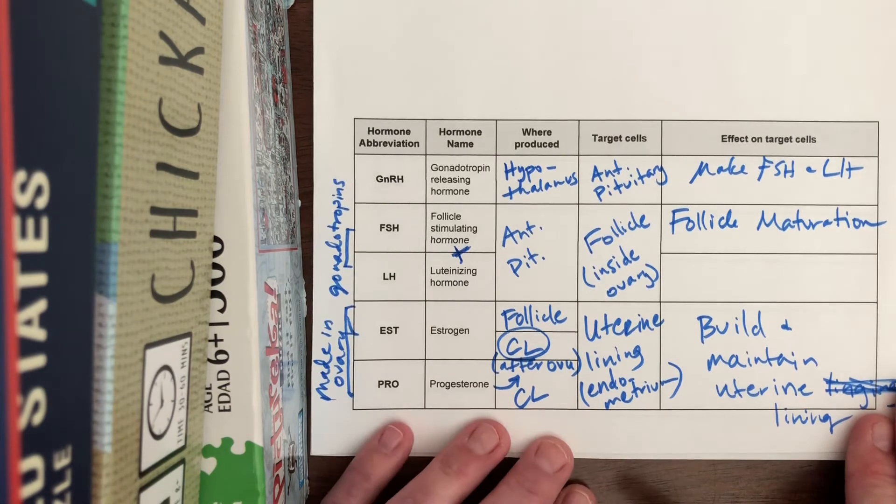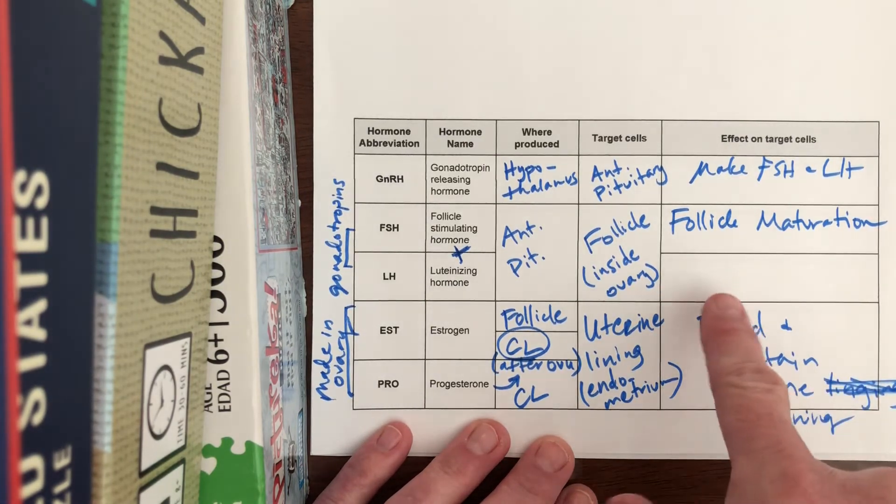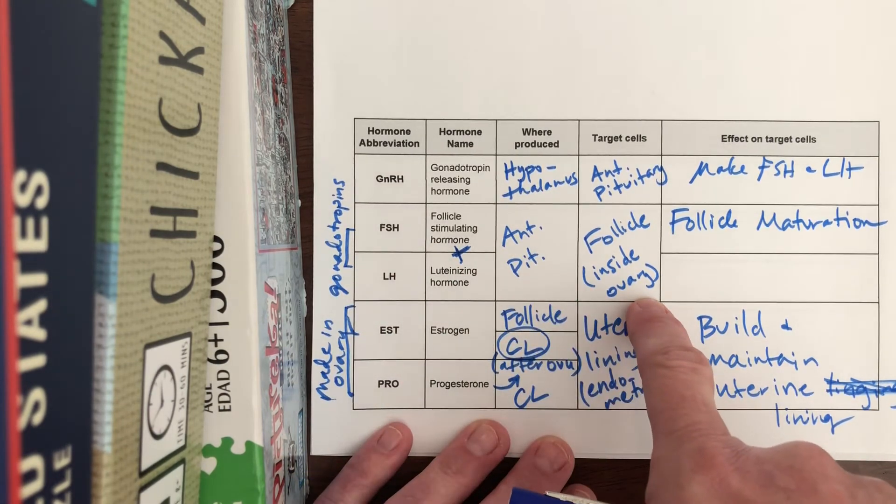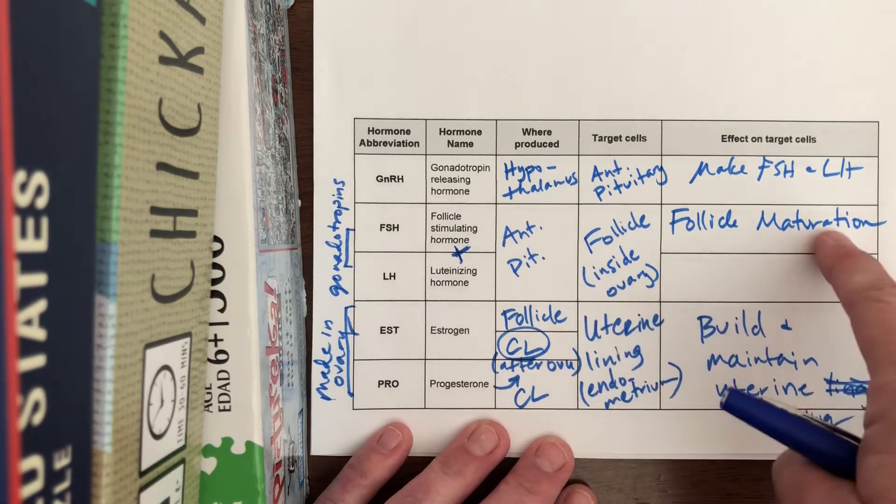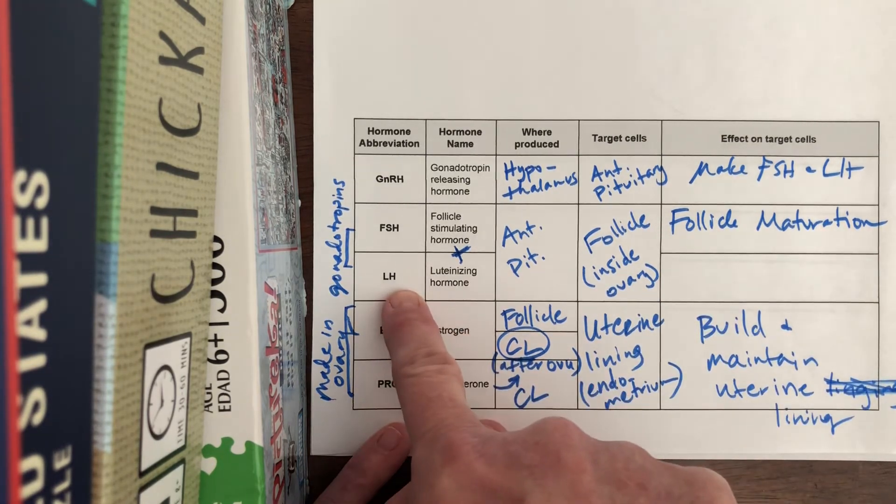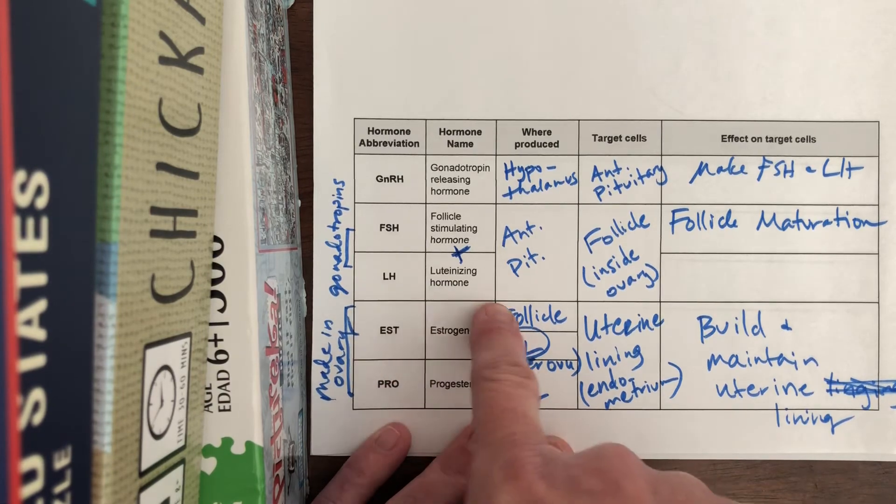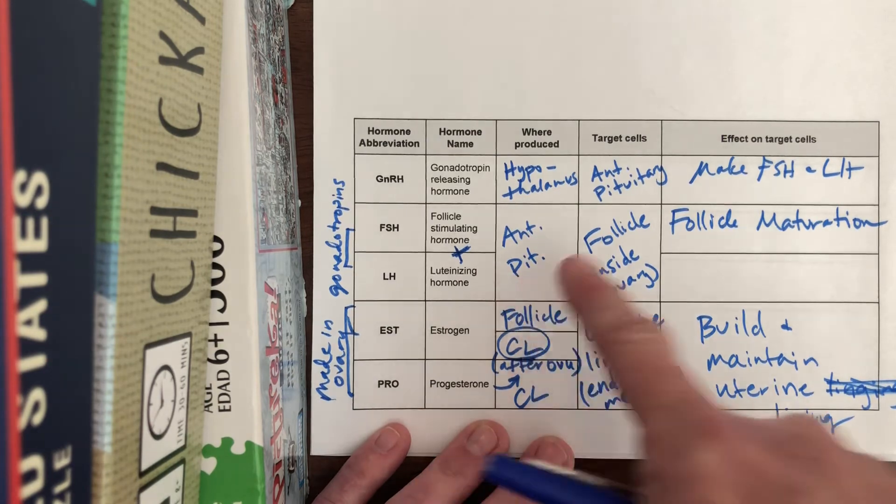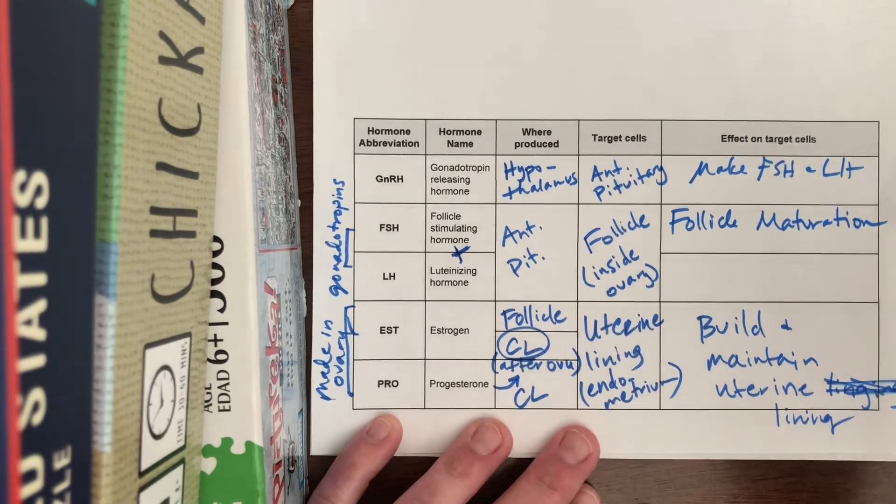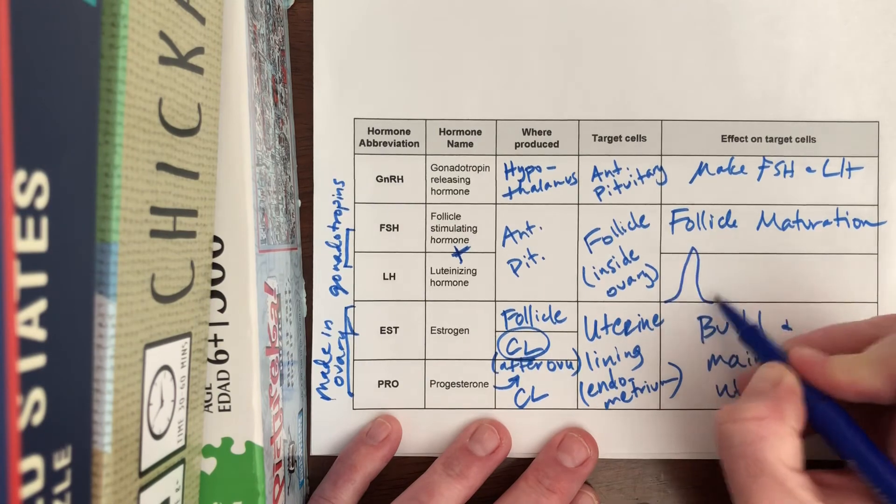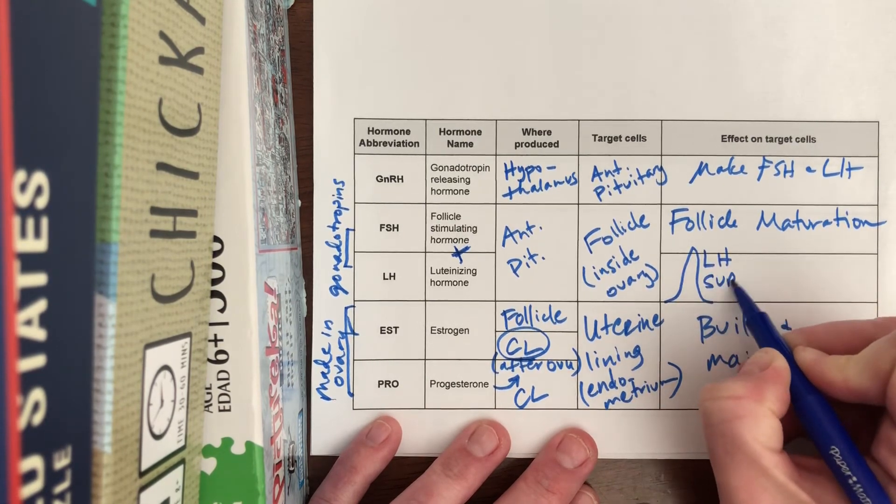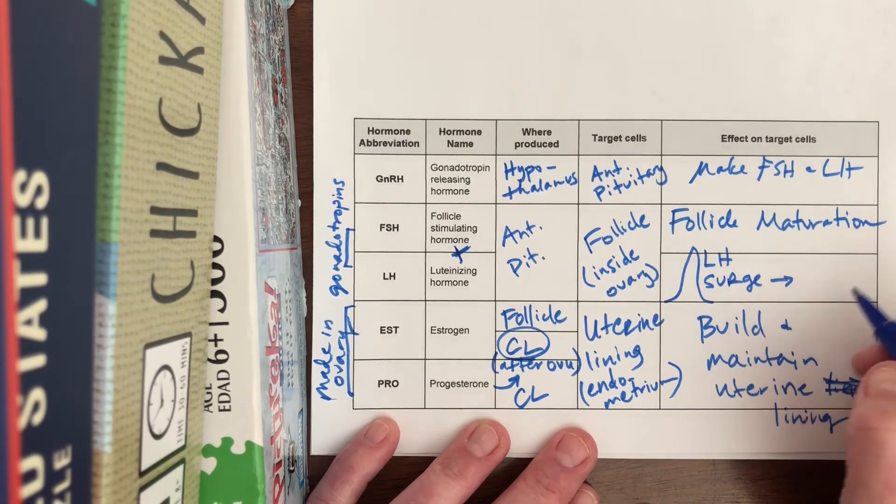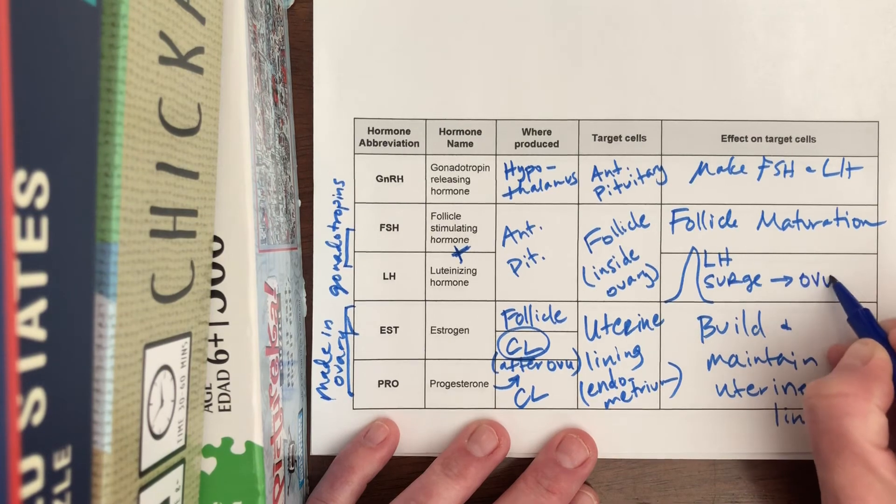I just got to finish this little bit off. FSH made by anterior pituitary targets the follicle in the ovary, which is maturing. Luteinizing hormone - this is the big guns right here - this targets the follicle, made by the anterior pituitary targets a follicle, but this one does the LH surge. And like I said the other day, LH surge is the number one event for ovulation.